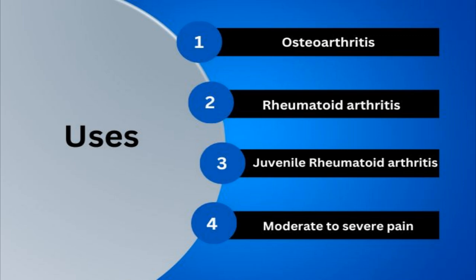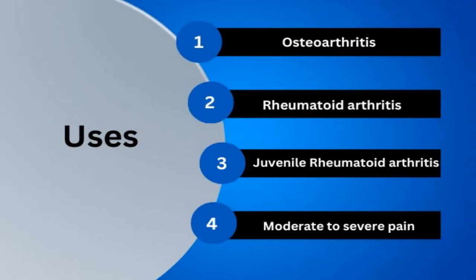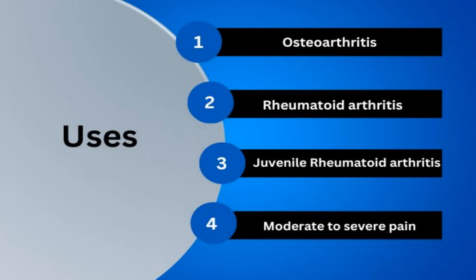Approved uses of meloxicam include osteoarthritis, rheumatoid arthritis, and juvenile arthritis — which is basically inflammation in the joints of children. It is also used to manage moderate to severe pain, either as a monotherapy or in combination with other medications that are non-NSAIDs.